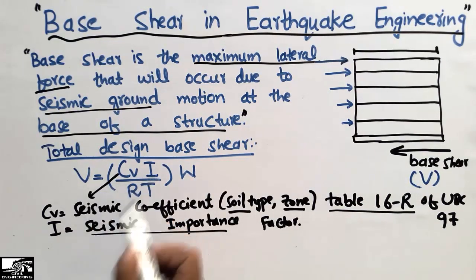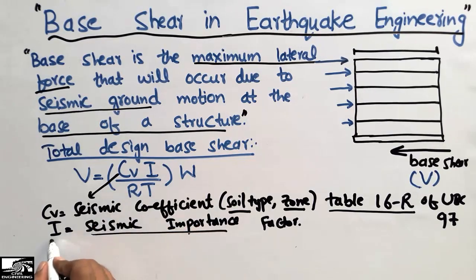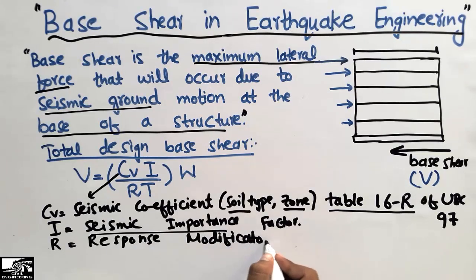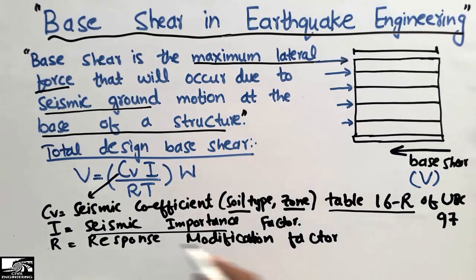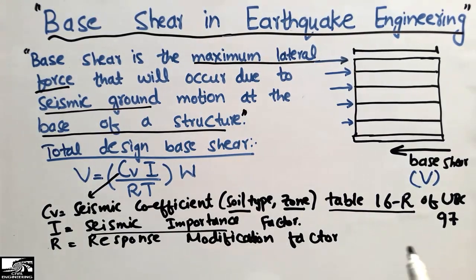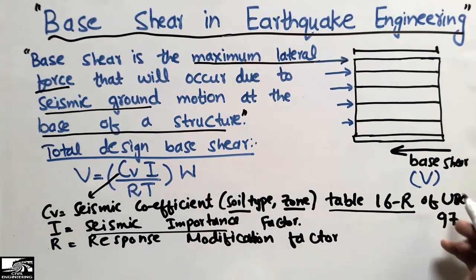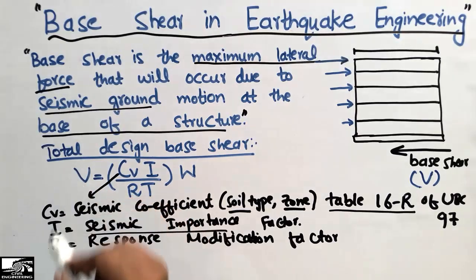R is the seismic response modification factor. It depends on the type of building — it may be a steel building, a concrete building, or another structural type. You find the appropriate value from a table in the UBC and put it into the equation to find the base shear.